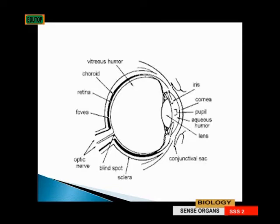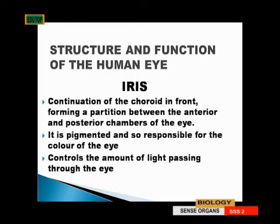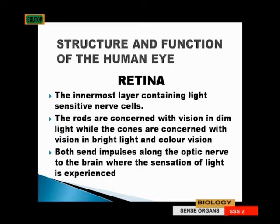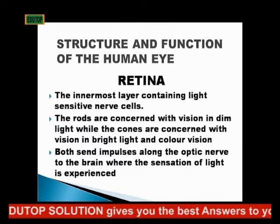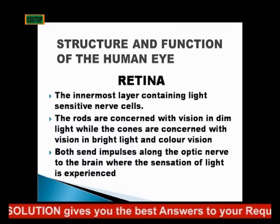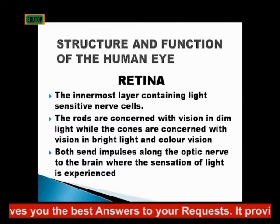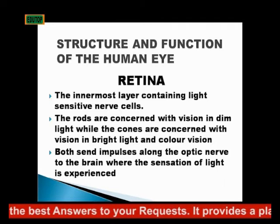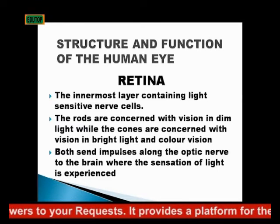The iris is pigmented and responsible for the color of the eye. It controls the amount of light that passes through the eye. The retina is the innermost layer containing the light-sensitive nerve cells. It has the rods and the cones — the rods are concerned with vision in dim light, while the cones are concerned with vision in bright light.